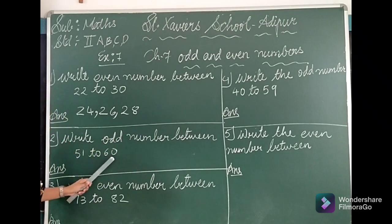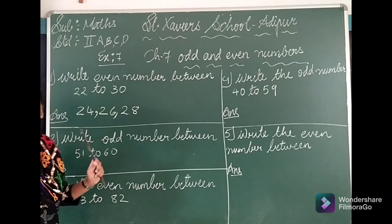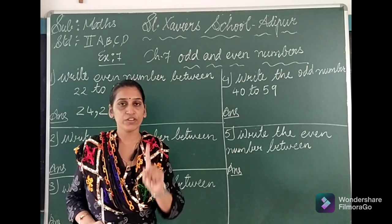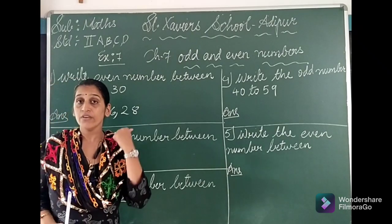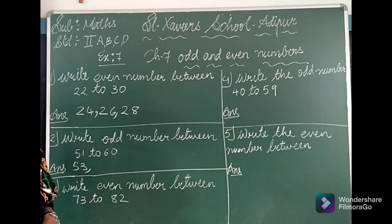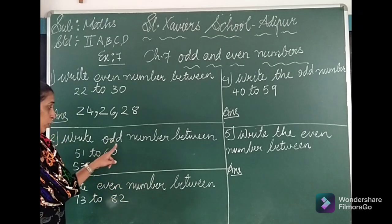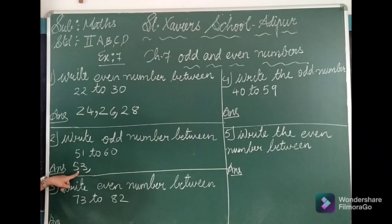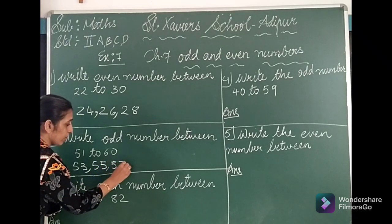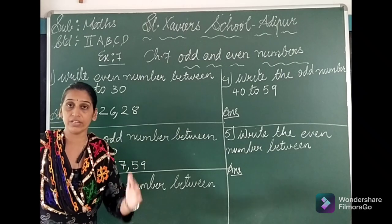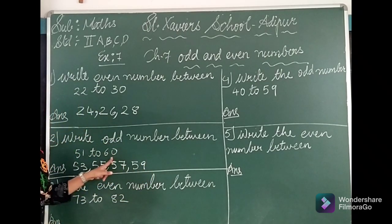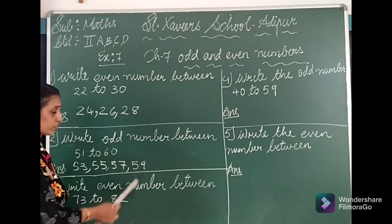Next portion: write the odd numbers between 51 to 60. So 51 to 60 — which are the odd numbers? 51 is odd but since it's the boundary we will not write it. 52 is even. 53 is odd — we write 53. 54 is even. 55 is odd — we write 55. 56 is even. We write 57. 58 is even. We write 59. So our odd numbers are 53, 55, 57 and 59.